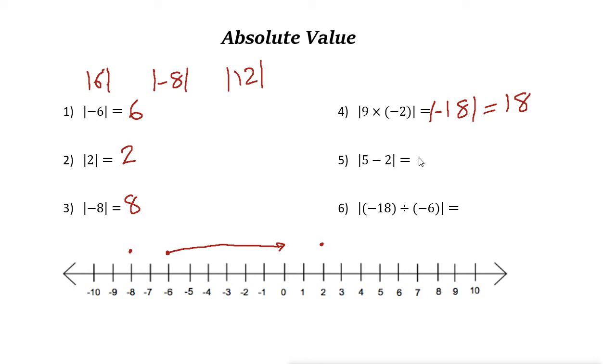Five minus two is absolute value of three. Three is here and the distance to zero is just three. Absolute value of three is three. Negative 18 divided by negative six is just three, and absolute value of three is just three.